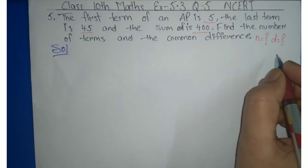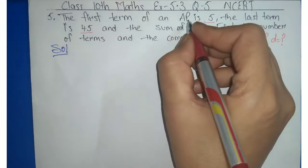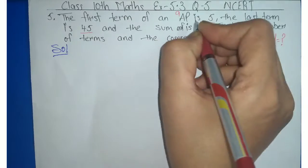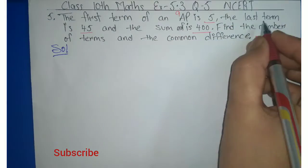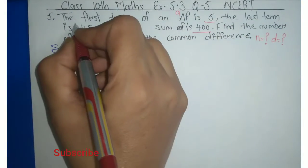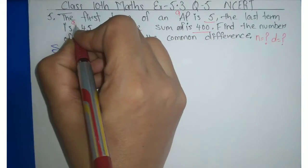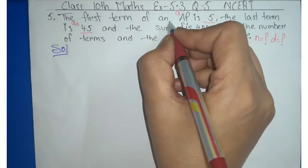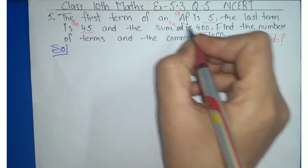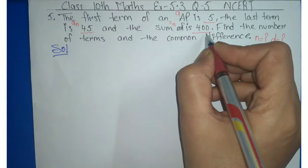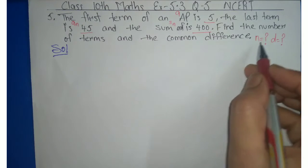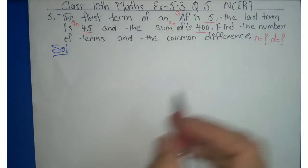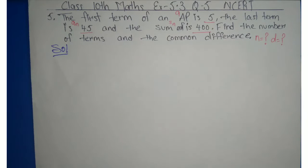हमें given है: AP की first term यानी A given है, last term यानी nth term given है, और sum of n terms हमें given है 400। हमें find out करना है N and D। तो solution start करते हैं इस question का।